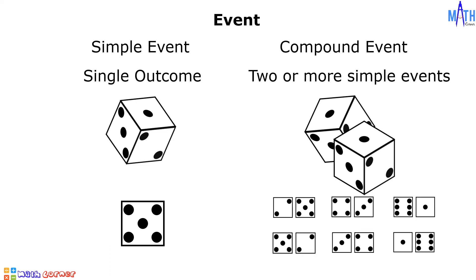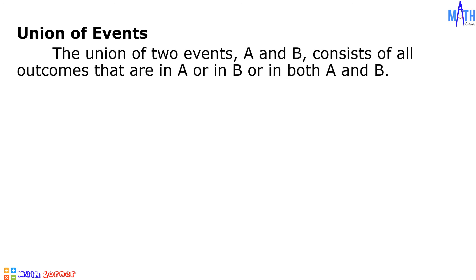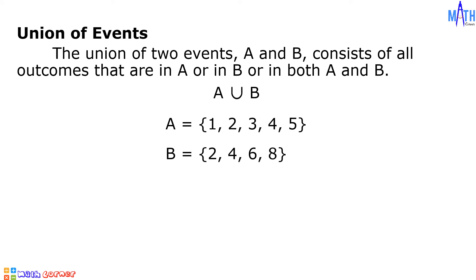Let us proceed to the union of events. The union of two events A and B consists of all outcomes that are in A, or in B, or in both A and B. The union of events A and B is denoted by this. For example, event A consists of the elements 1, 2, 3, 4, and 5, and event B consists of the elements 2, 4, 6, and 8. The union of events A and B consists of the elements 1, 2, 3, 4, 5, 6, and 8.